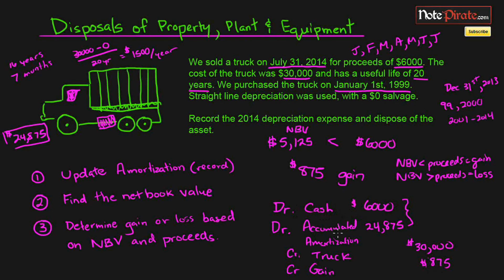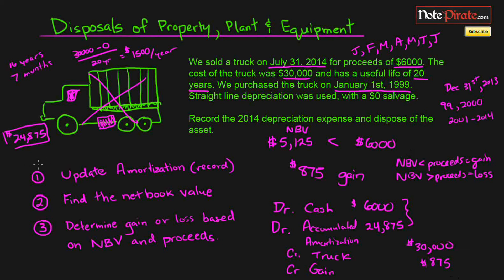To summarize: we debited cash because we received $6,000; we debited accumulated amortization to clear out the contra asset account since our truck is no longer on our books; we credited the truck account because we no longer have the truck; and we credited a gain of $875. That's how you record depreciation expense and then dispose of the asset. Remember to follow these three steps. If you have any questions, leave them in the comment section.